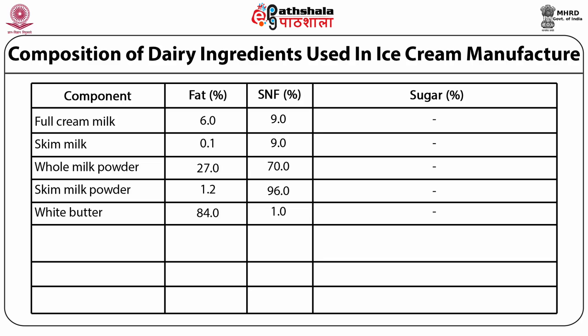White butter is a fat-rich ingredient where fat content may be around 84% depending on moisture content. It has around 1% MSNF, which may be neglected during formulation calculations. Sweetened condensed milk, as per FSSA requirements, should have minimum 9% fat and minimum 22% SNF. It automatically contains sugar for preservation, containing around 42.5 to 45% sugar - which must be taken into consideration when calculating the amount of additional sucrose needed in the ice cream mix.